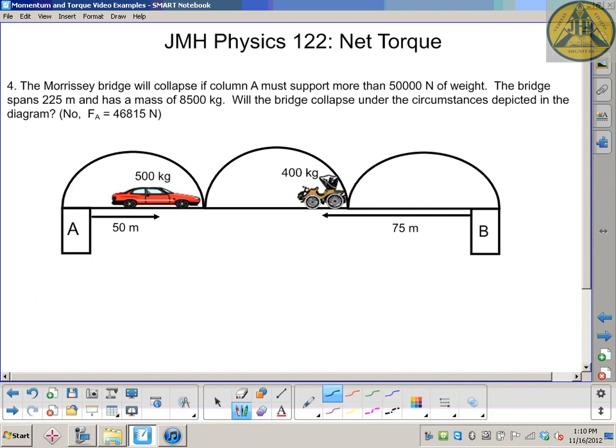This is another application of static equilibrium for grade 12 physics, focusing on the use of torque and how net torque and net forces work together. For this problem, the Morrissey bridge will collapse if column A must support more than 50,000 newtons of weight. The bridge spans 225 meters and has a mass of 8500 kilograms.